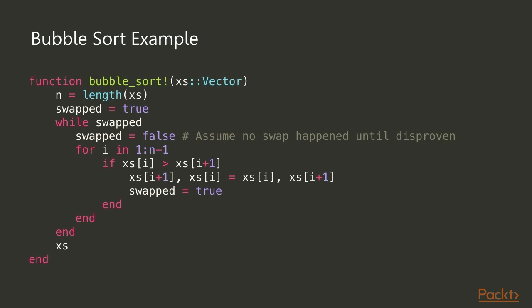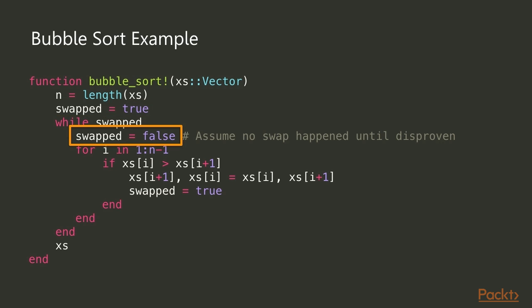Here's the bubble sort code in Julia. We start by marking a flag called `swap` that indicates whether we actually had to swap two numbers. We initialize it to `true` — not because we know swapping happened, but to avoid an early exit from the while loop, which checks whether a swap occurred. Once there's been no swapping, we know the array went through without any element out of order, so it's sorted.